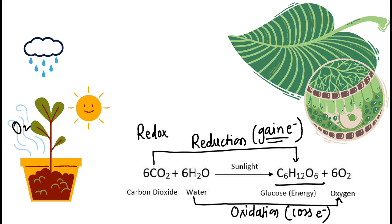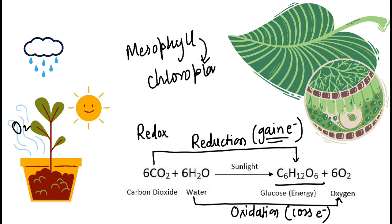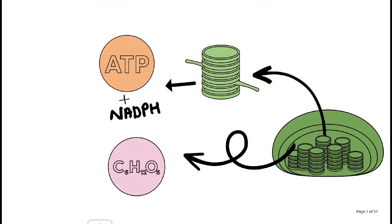Where exactly does photosynthesis occur in the leaves? It occurs in the mesophyll cells. In mesophyll cells there is a type of plastid called the chloroplast. Plastid is a broader term — there are many types of plastids, one of which is chloroplast. Not all plastids are chloroplasts. Chloroplasts are the green ones because they contain the green pigment chlorophyll.